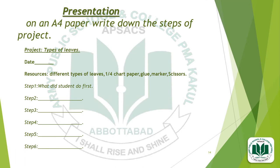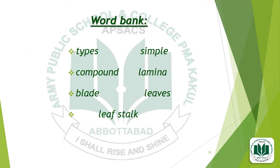Presentation. Present your project work in the following way. On an A4 paper, write down the steps of the project — Project: Types of Leaves. First, write the date when you did your project. Resources: different types of leaves, one-fourth chart paper, glue, marker, and scissors. Write steps 1 through 6, describing what you did in each step. Word bank: Types — Simple, Compound; Lamina, Blade, Leaves, Leaf stalk.